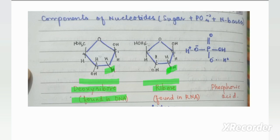Both sugars are almost similar — both have five carbon atoms: carbon 1, carbon 2, carbon 3, carbon 4, and carbon 5. Similarly in ribose: carbon 1, carbon 2, carbon 3, carbon 4, and carbon 5. Both are almost similar, but the difference lies at carbon number 2.